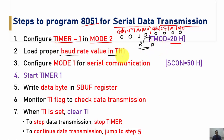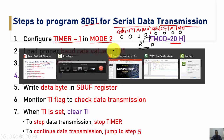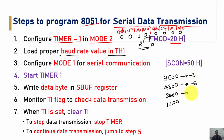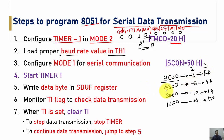Step 2: Load the proper baud rate value into TH1. The baud rates supported by the 8051 are 9600, 4800, 2400, and 1200. Corresponding decimal values are -3, -6, -12, and -24. In hex, these are FDH, FAH, F4H, and E8H respectively. Either the decimal or hex value can be loaded into TH1 to set the required baud rate as specified in the program statement.